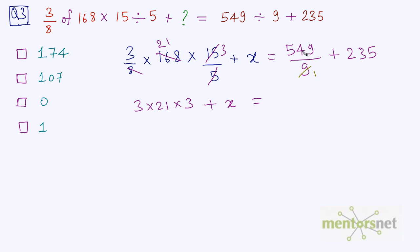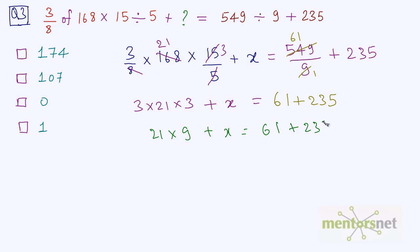Cancelling on the right side: 9 times 61 is 549, so we get 61 plus 235. Now we have to find the value of x. So 21 times 9 plus x is equal to 61 plus 235. Now 21 times 9 is 189, so 189 plus x equals 296. Solving this, x comes out as 107.